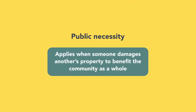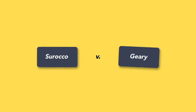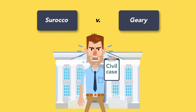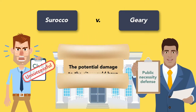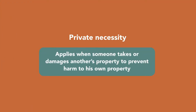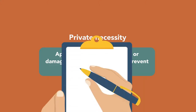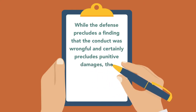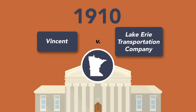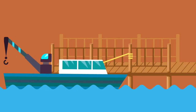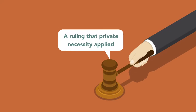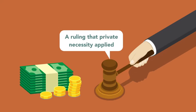Public necessity applies when someone damages another's property to benefit the community as a whole. In Sirocco v. Geary, the mayor of San Francisco ordered the fire department to demolish the plaintiff's house to contain wildfires in the city. The plaintiff's civil case against the mayor was unsuccessful; based on the public necessity defense, the court opined that the potential damage to the city would have been substantially more severe without the order to demolish the plaintiff's home. Private necessity applies when someone takes or damages another's property to prevent harm to his own property. While the defense precludes a finding that the conduct was wrongful and precludes punitive damages, the defendant may still be liable for damage to the plaintiff's property. In the 1910 Minnesota case of Vincent v. Lake Erie Transportation Company, a steamship company tied its boat to the plaintiff's dock to keep it safe during a storm. Though the boat severely damaged the dock, the court found the boat would have likely sunk if not attached. Even with a ruling that private necessity applied, the court ordered the steamboat company to compensate the plaintiff for damage to the dock.